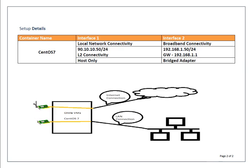Here is my setup. We are going to create one container named CentOS 7, installing CentOS 7 64-bit, which is 100% similar to Red Hat. I'm going to configure two network interfaces. The first is for local network connectivity — inter-machine communication between VMs. I'm assigning IP 90.10.10.50, subnet /24 (255.255.255.0), with no gateway since that's L2 connectivity. This interface will be a host-only interface.